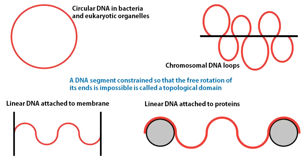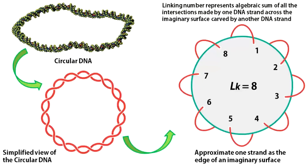A few examples of topological domains are shown here. Circular DNA is one example, which is typical of bacteria, mitochondria, chloroplasts, and many viruses. In this case, there are no DNA ends at all since both DNA strands are covalently closed. The chromosomal DNA of eukaryotes is linear overall, but they consist of large DNA loops firmly attached to the nuclear matrix. These loops represent topological domains — they are equivalent to circular DNA topologically. Similarly, DNA attached to the membrane and those attached to proteins behave as similar topological domains.